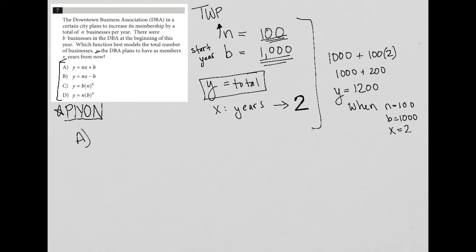So choice a says that y, which I know I want to be 1200 equals n, which I know for me was 100 times x, which again, for me was two, plus b, which again, for me is 1000. And I see that on the first shot here, I actually do end up with 1200. So 1200 does equal 1200, which means that choice a must be the correct answer.